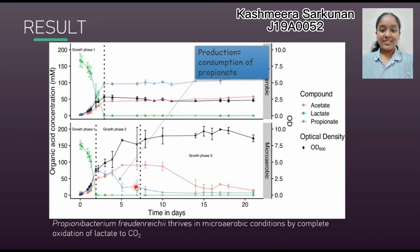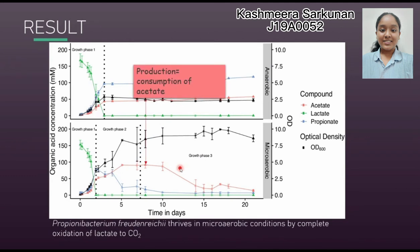This is analogous to the E. coli acetate switch — the cessation of secreting acetate when a preferred substrate becomes limiting and the electron transport chain is active. In this case, the name is the 'propionate switch,' occurring in growth phase three. The propionate switch can be described as a transition from production to consumption of propionate when lactate is depleted in the presence of an electron acceptor in P. freudenreichii. In growth phase three, there is no other organic acid detected, showing that complete oxidation of acetate to carbon dioxide has occurred.